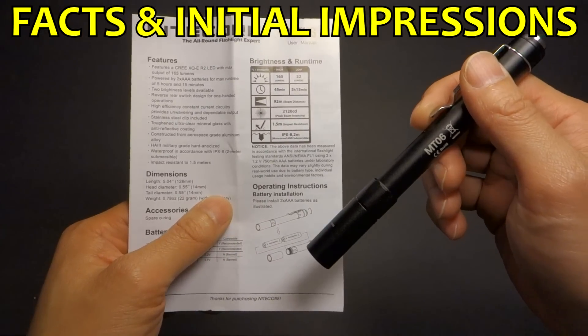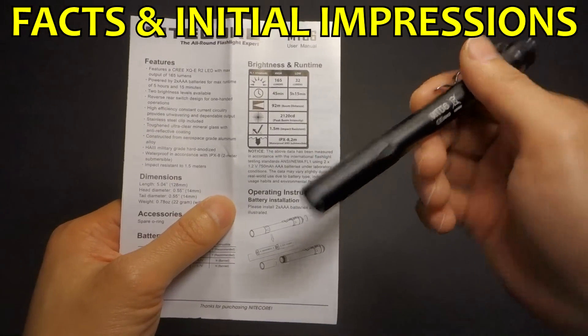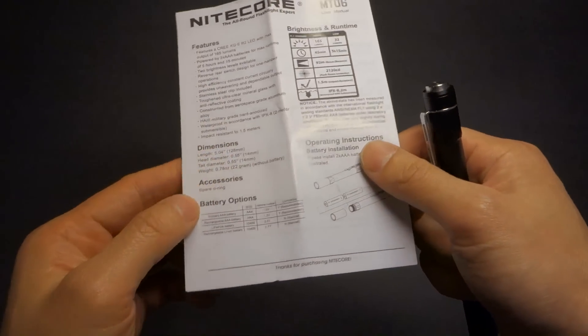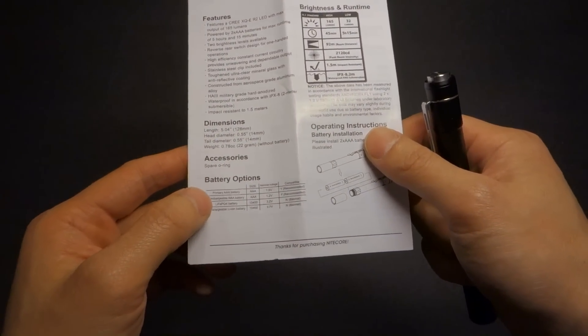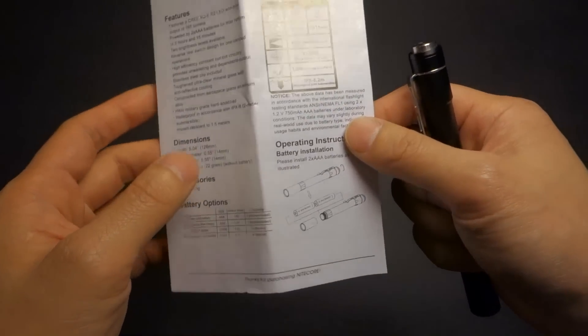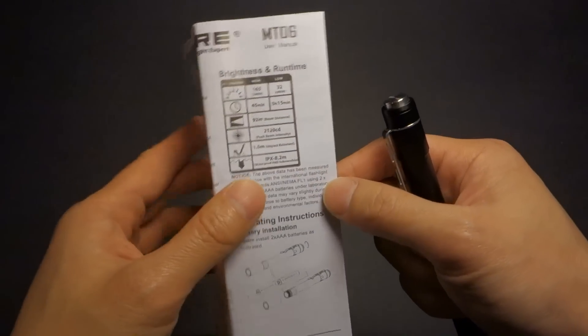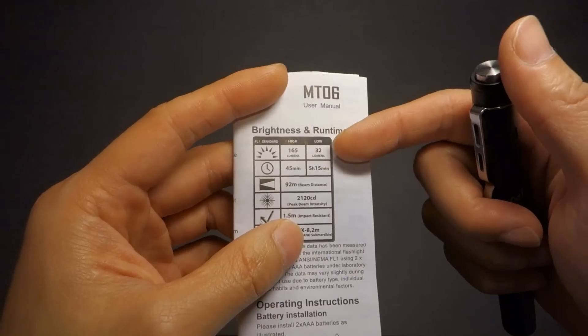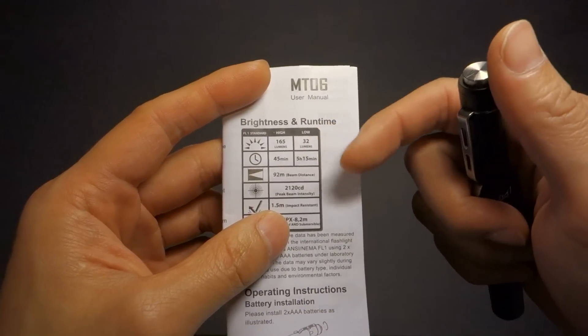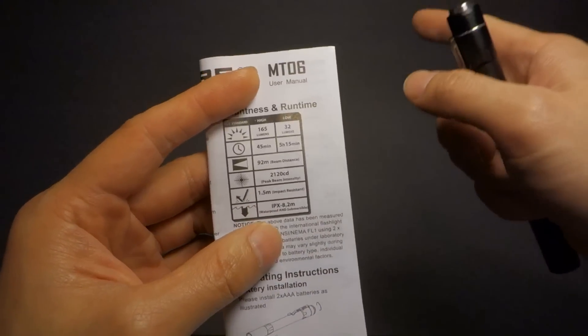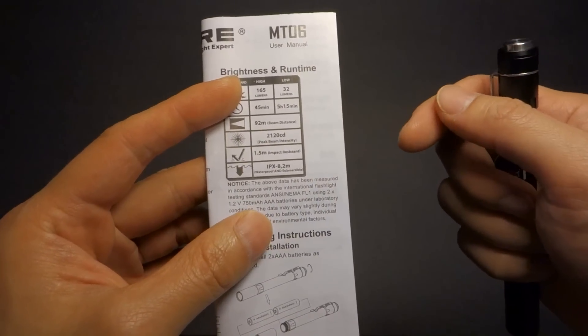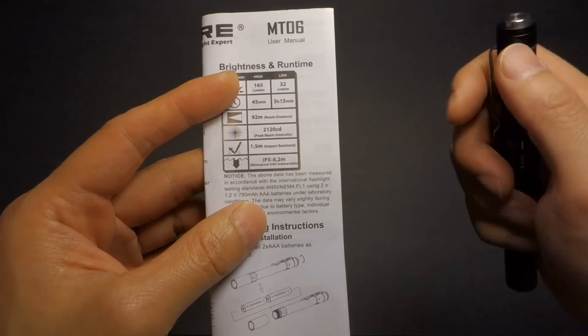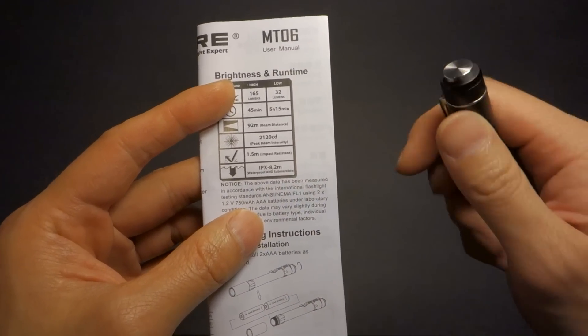So just to cover off on some quick facts of this light, it's a two AAA-sized pen light that can run off of either nickel metal hydrides or standard alkaline cells. They also warn against using life-po4 batteries as well as rechargeable, meaning 10-440s, or in this case they listed 10-400s, so that exceeds the standard voltage range. There's two output modes on this light: a high at 165 lumens and a low of 32 lumens, and those run at 45 minutes and 5 hours and 15 minutes respectively. Shoots the beam out to 92 meters. It's got a peak beam intensity of 2120 candela. Drop impact resistance to one and a half meters.